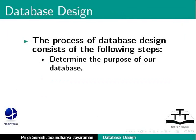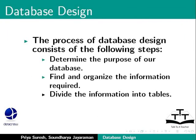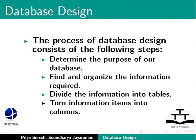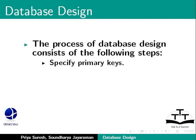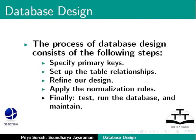The process of database design consists of the following steps: determine the purpose of our database, find and organize the information required, divide the information into tables, turn information items into columns, specify primary keys, set up the table relationships, refine our design, apply the normalization rules, and finally test, run the database and maintain.